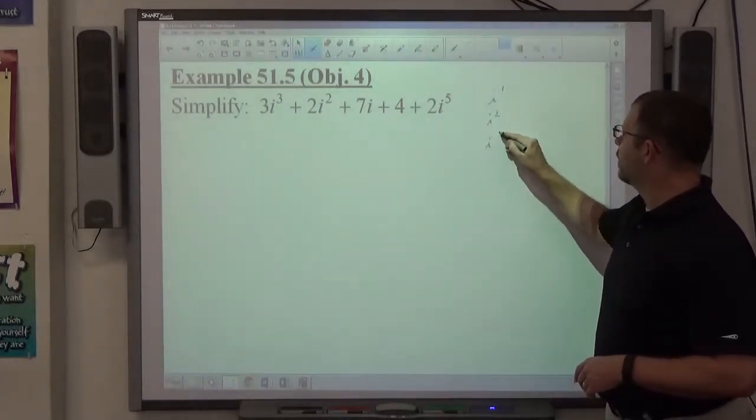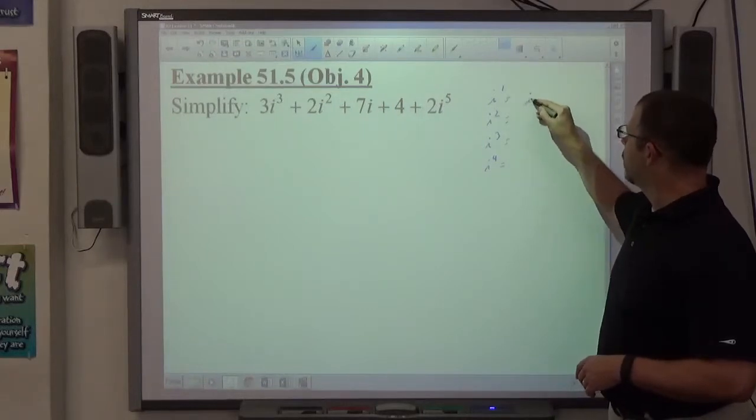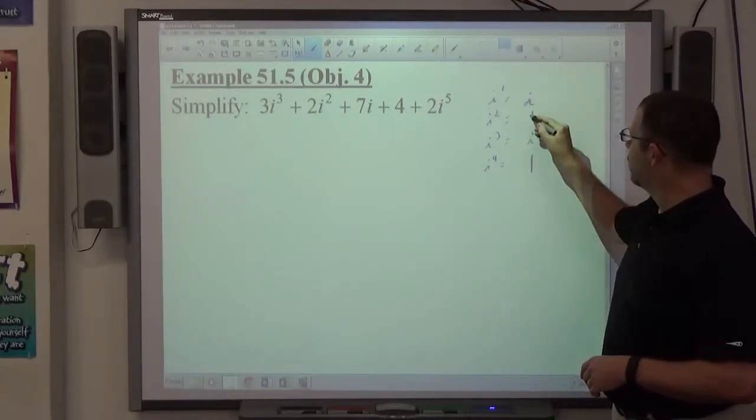i to the first, i to the second, i to the third, i to the fourth equals i, -1, -i, 1.